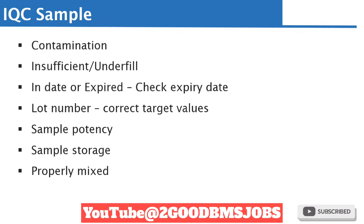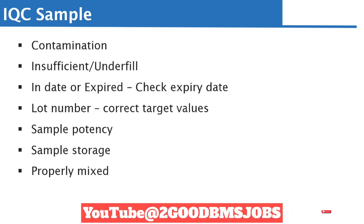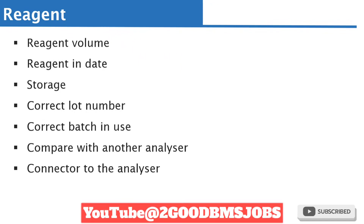Also check sample potency. Control samples have a validity period — some are valid for 24 hours, some 48 hours. If it is beyond its validity, you may need to get another vial. Another factor is storage temperature: has the control sample been stored at the appropriate temperature, or was it stored outside the recommended temperature? One factor many people miss is whether the control sample was properly mixed before running it on the analyzer — that can also lead to failure.